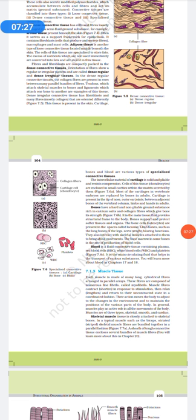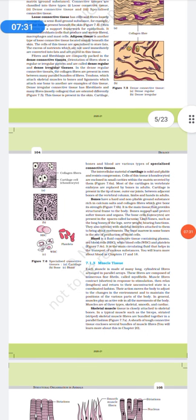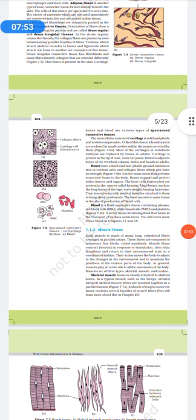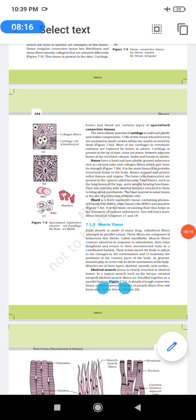The intercellular material of cartilage is solid, pliable, and resist compression. Cells of this tissue are enclosed in small cavities within the matrix, secreted by them. Most of the cartilage in the vertebrate embryos are replaced by bones in the adults. Now bones, they are basically hard and non-pliable ground substances, which is rich in calcium and collagen, which give the bone its strength. The main function is to give the structure to the body, which is the framework. Bones support and protect softer tissues and various internal organs. The bone cells, which is the osteocytes, they are present in the spaces called lacunae. The limb bones, such as the long bones of the leg, serve weight-bearing functions. They also interact with the skeletal muscles attached to them.